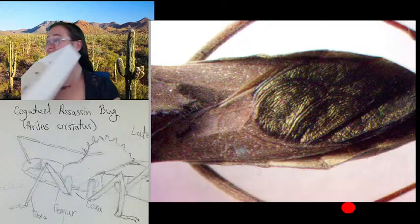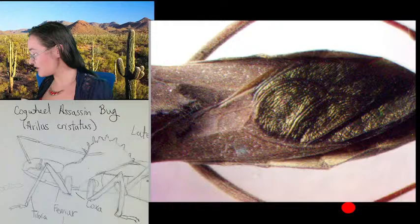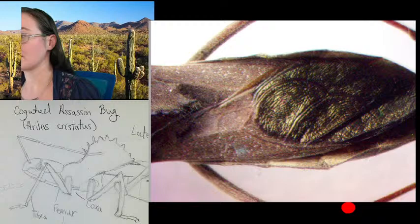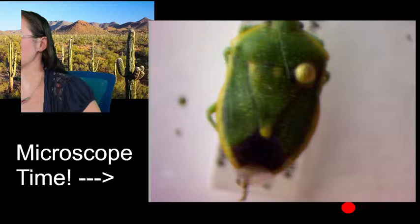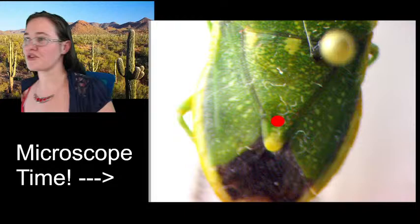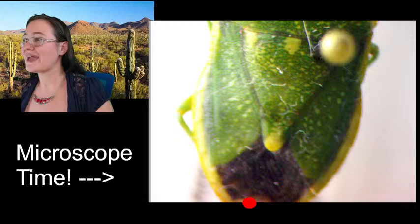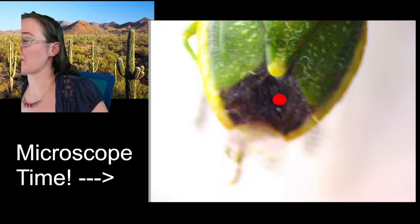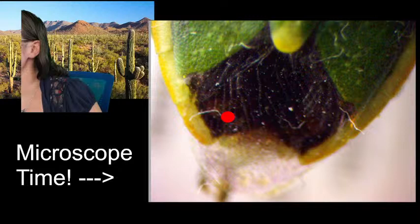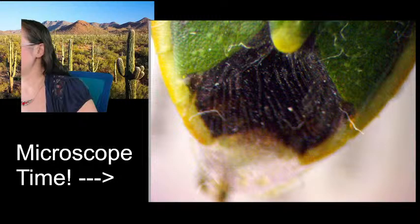I have one other example of a hemi-elytra to show you — this is a stink bug, so it's also a hemipteran. This triangle here is the scutellum — that's not part of the wings. But this right here is a wing, and this right here is a wing, and if you look way down here in the back, this is part of the membranous portion. It's clear in a couple of places, but it does look a lot like a fingerprint at different angles.